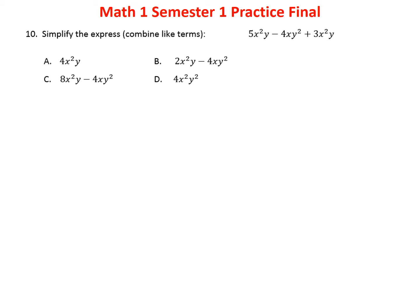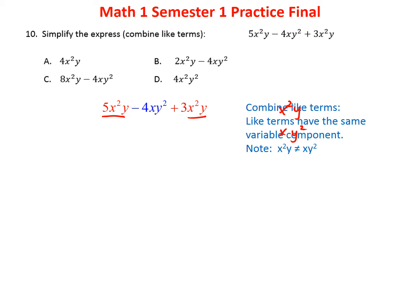Problem ten is similar — we're looking for identical variable components to combine. Notice that x squared y is not the same as xy squared, so those can't be combined. However, 5x squared y and 3x squared y are exactly the same terms, so we combine them: 5 plus 3 is 8x squared y. Nothing combines with minus 4xy squared, so we leave that alone. The answer is C.